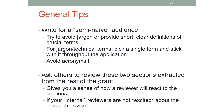You need to write for a semi-naive audience. Avoid jargon, or provide short, clear definitions of crucial terms. If you do need technical terms, pick a single term and stick with it. Remember that not everyone reviewing your grant will be an expert in your area. Counsel in particular is a broad group including community members as well as scientists — you don't want to mire them in jargon when they're deciding whether to fund your research. Ask others to review these two sections extracted from your grant; this gives you a sense of how reviewers might react. If your internal reviewers are not excited, you need to keep working — maybe revise your sales pitch, the way you're explaining things, or the impact you're trying to sell.